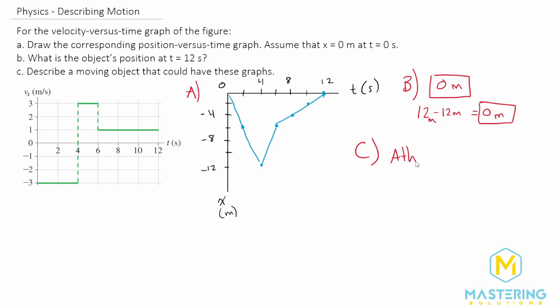So I'll just put athletic drill for my part C. And obviously you can come up with your own, but anything could really happen where something is running in the negative x direction, and then it turns around and runs in the positive x direction at the same speed, and then slows down until it stops at where it started from.